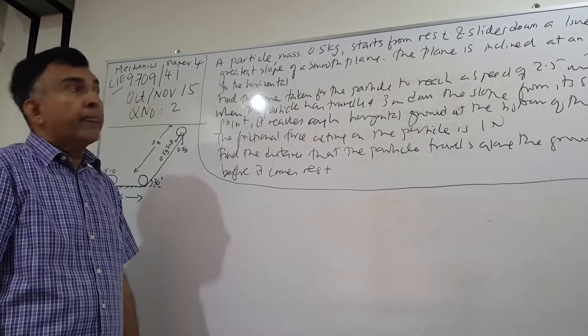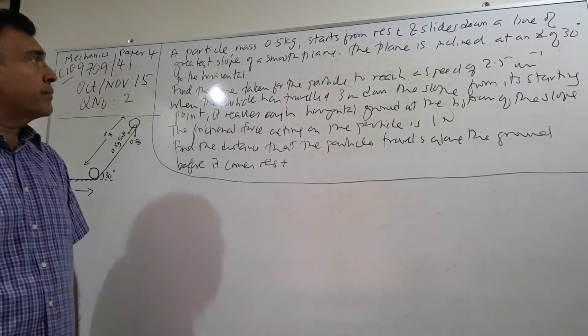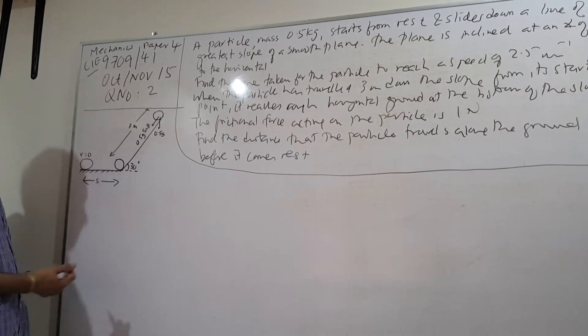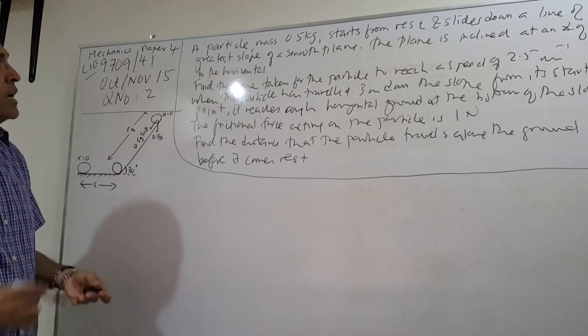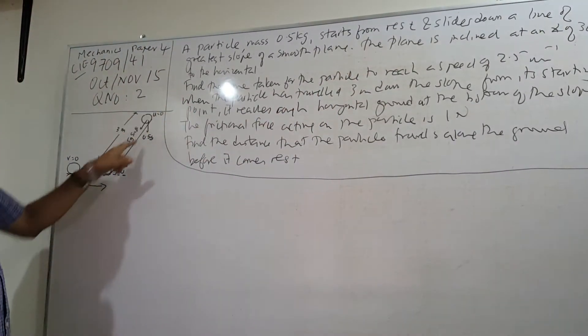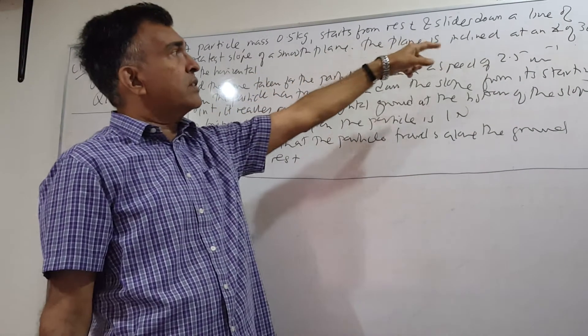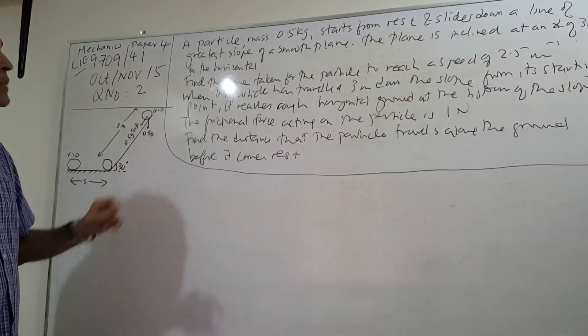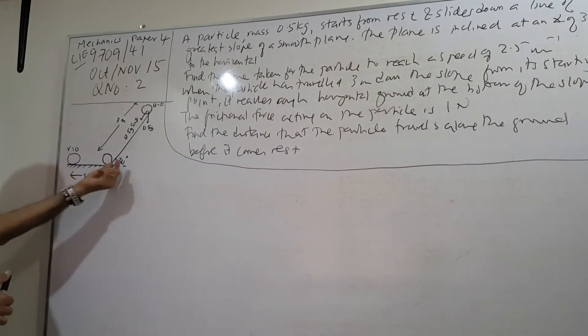A particle of mass 0.5 kg starts from rest, so u equals 0, and slides down a line of greater slope. You can look at my picture here as we go along. Starts from rest, slides down a line of greater slope of a smooth plane. The plane is inclined at an angle of 30 degrees to the horizontal, so I've indicated 30 degrees here.